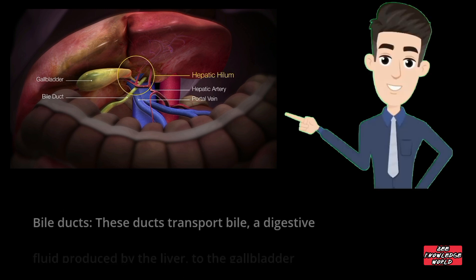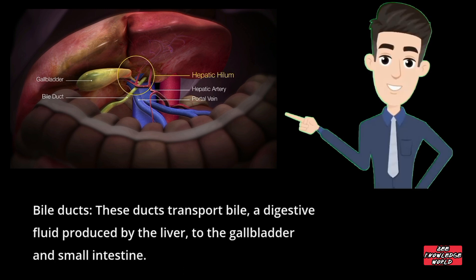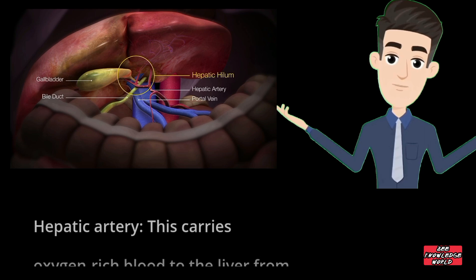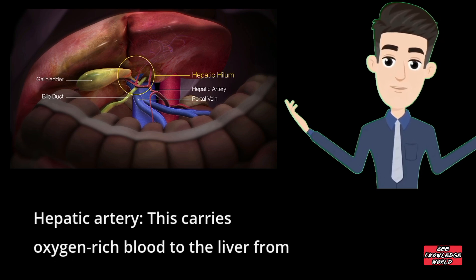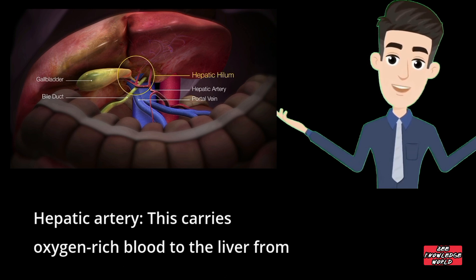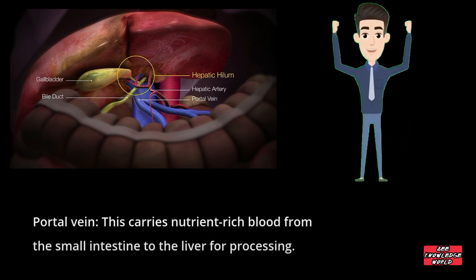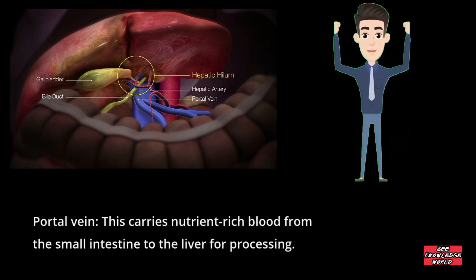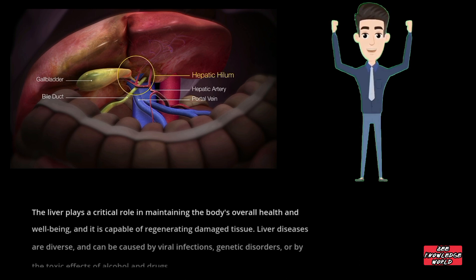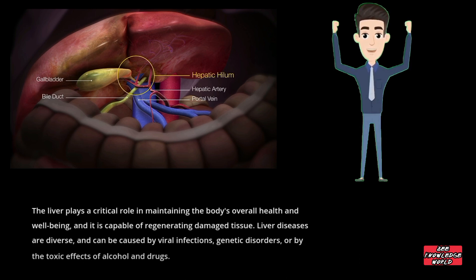Bile ducts transport bile, a digestive fluid produced by the liver, to the gallbladder and small intestine. The hepatic artery carries oxygen-rich blood to the liver from the heart. The portal vein carries nutrient-rich blood from the small intestine to the liver for processing.